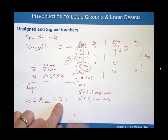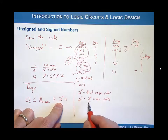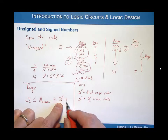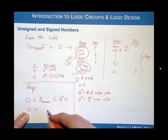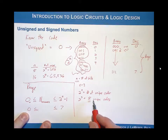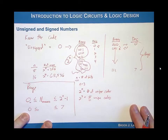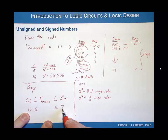Two to the n is the number of unique codes, so for n equals three we have eight unique codes. But we also have the minus one in the range formula — so where does the minus one come from? In our example, we can represent from zero up to seven. Even though we have eight unique codes, we can't go up to eight because one of those codes is used for zero. When using binary number systems, we always have to account for the code zero. So for n equals three, we represent decimal zero up to decimal seven.